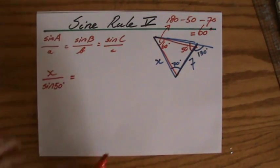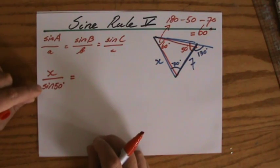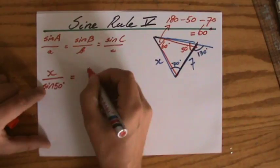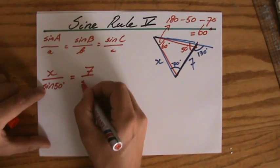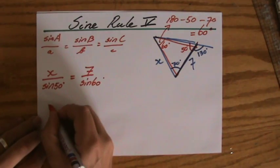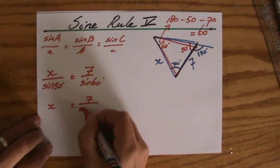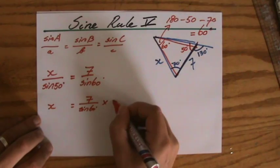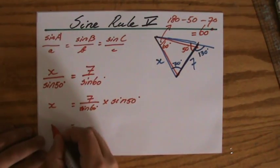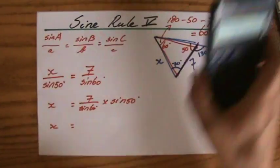So a length over its teammate's sign equals, I start with a length, so 7 over the sine of 60 degrees. Okay, and then X is 7 over the sine of 60 degrees times the sine of 50 degrees. I'm rearranging the formula to make X the subject.